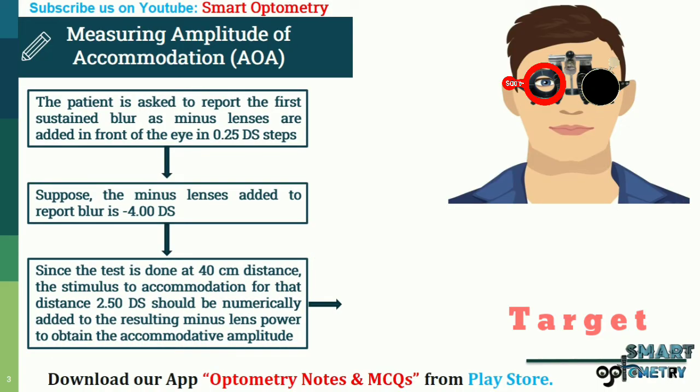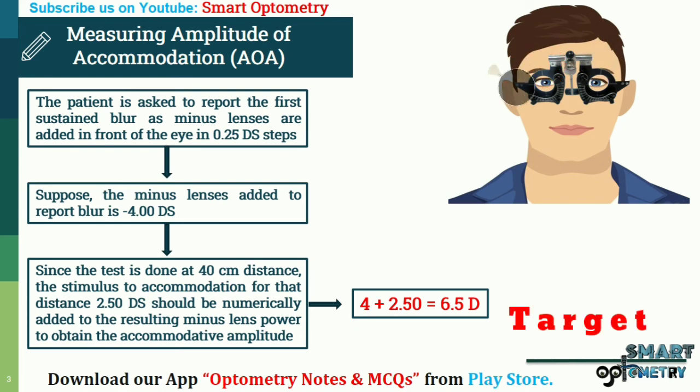Since the test is done at 40 cm distance, the stimulus to accommodation for that distance — that is 2.5 diopters — should be numerically added to the resulting minus lens power to obtain the accommodative amplitude. So the final amplitude of accommodation will be 4 plus 2.5, which equals 6.5 diopters. Now occlude the right eye and repeat the procedure for the left eye.